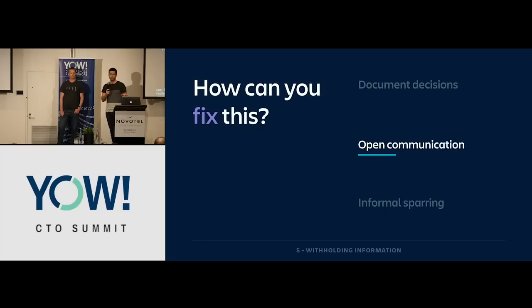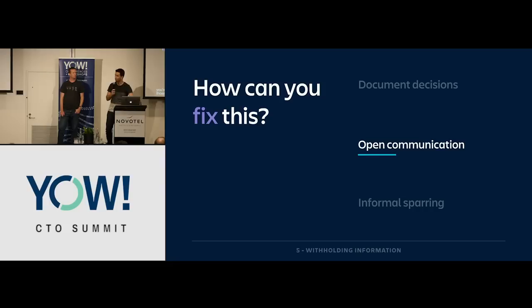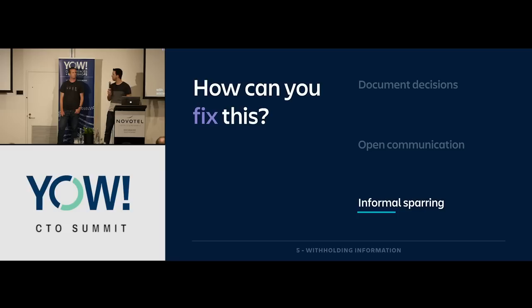Keep those open communication channels. If you work in the same office, sit physically close to each other and chat — that just encourages open communication. If you're not in the same office, over-communicate via remote channels: Slack, email, video conference. And the final point is informal sparring — take the time to spar ideas, decisions, and solutions with each other. Go to a whiteboard, draw something out. All of that really helps to keep you on the same page.